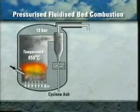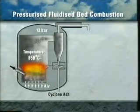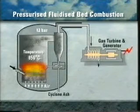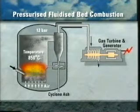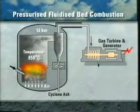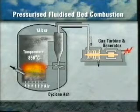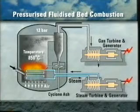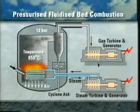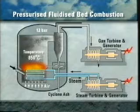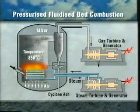The temperature of the fluidized bed is kept at about 850 degrees centigrade. Fly ash is removed from the combustion gases in cyclones. The pressurized gases then drive a gas turbine which supplies fluidizing and combustion air to the combustor and powers a generator. Heat extracted via tubes in the fluidized bed and also recovered from the gas turbine exhaust raises superheated steam which generates electricity through a traditional steam turbine.